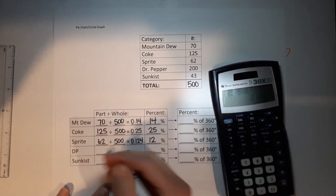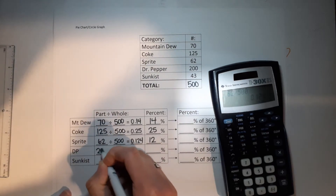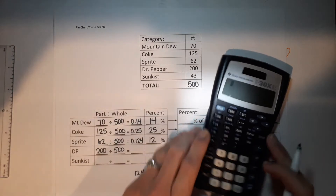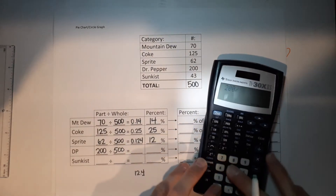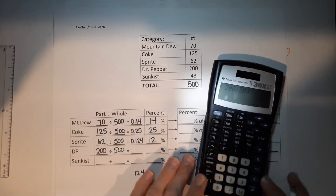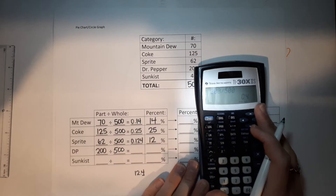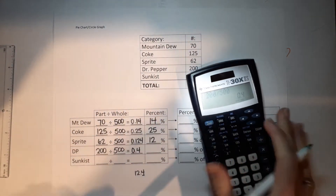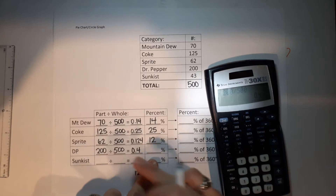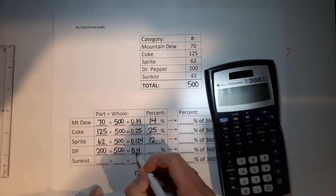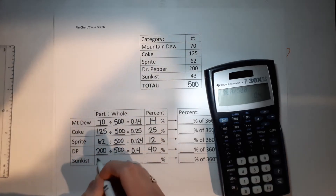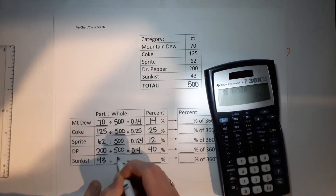Dr Pepper: 200 — it's my favorite so I gave it the most. 200 divided by 500 gives 0.4. As a percent, remember you move it over twice, so that's 40%.